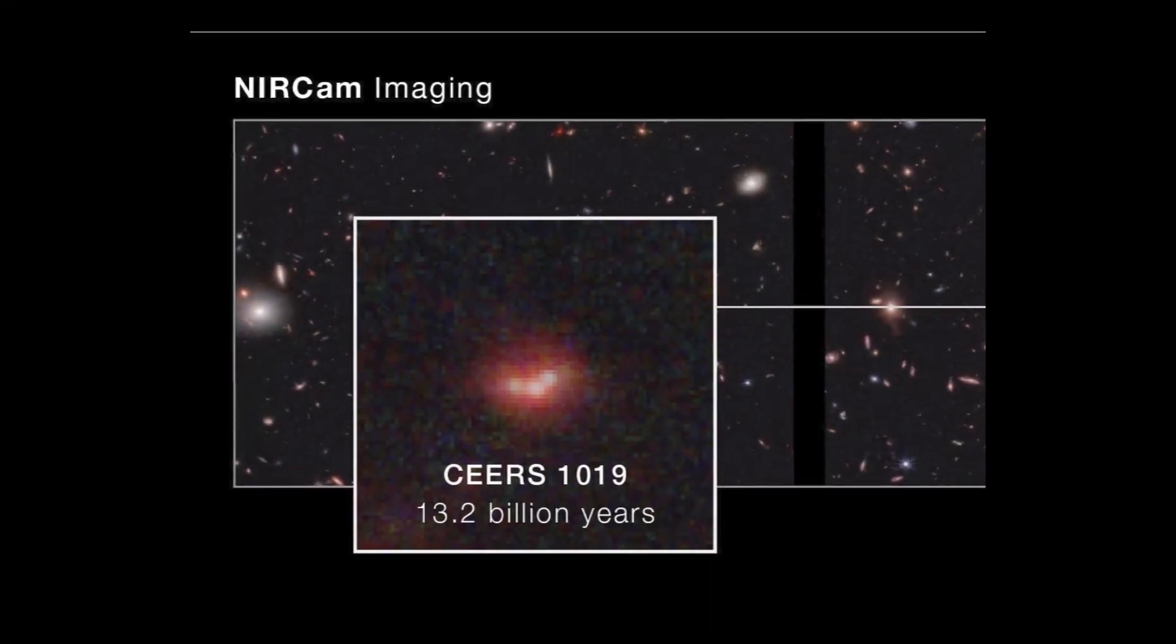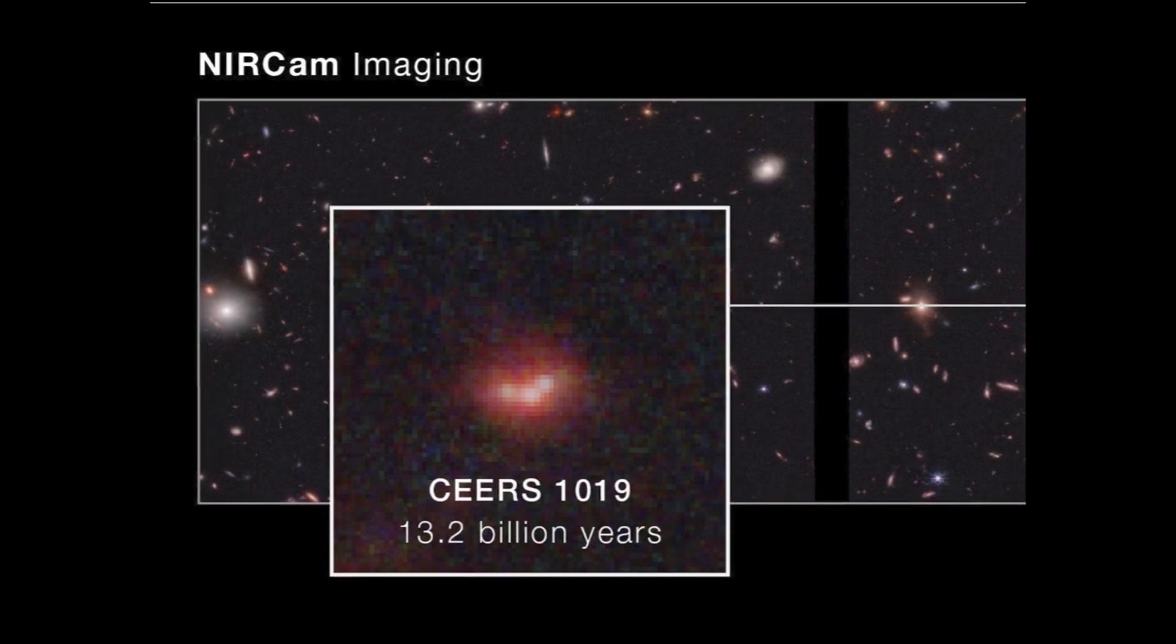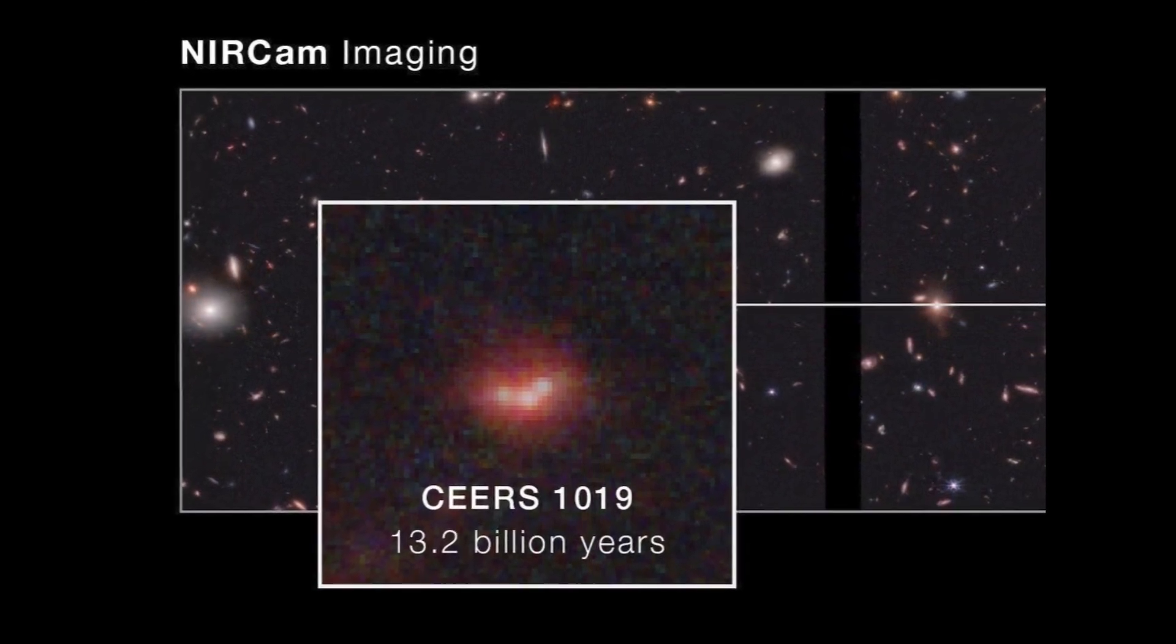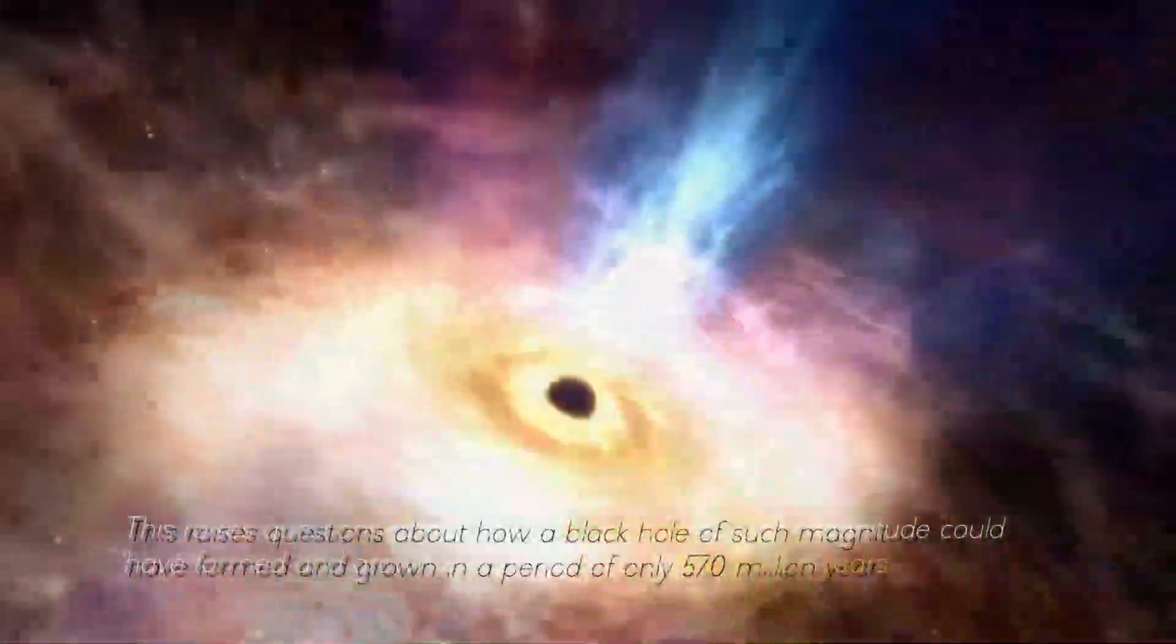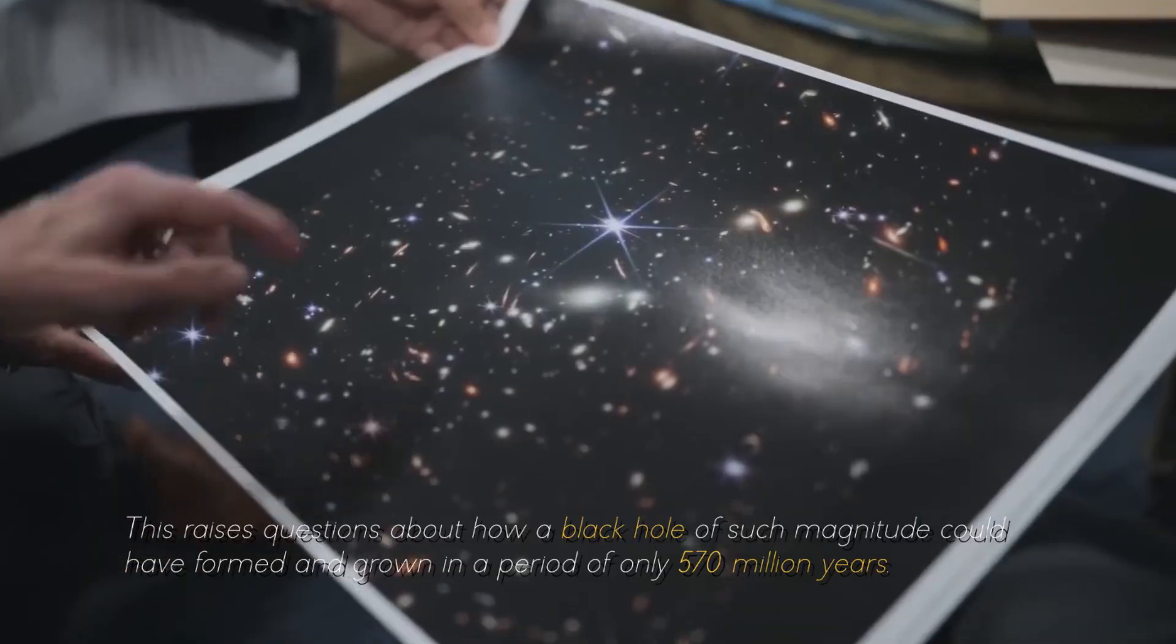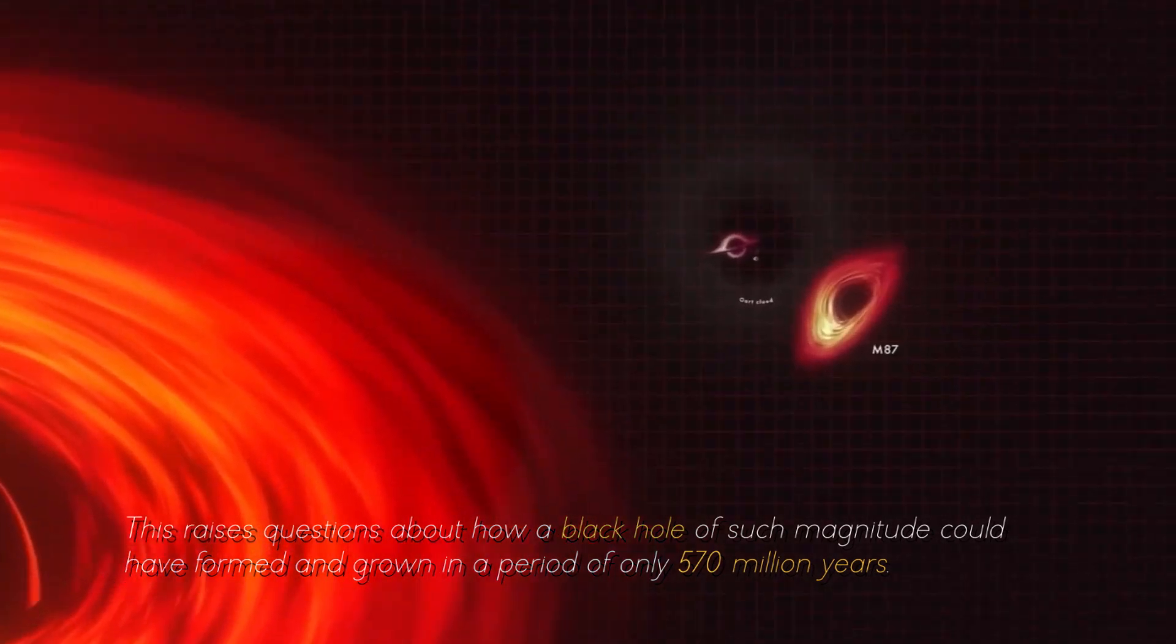This discovery is intriguing because the processes by which supermassive black holes grow generally involves mergers between black holes or the ingestion of surrounding matter. This raises questions about how a black hole of such magnitude could have formed and grown in a period of only 570 million years.